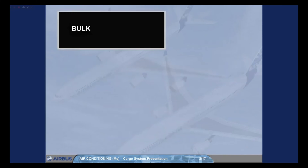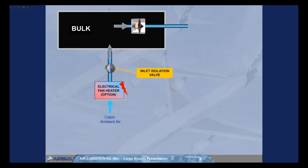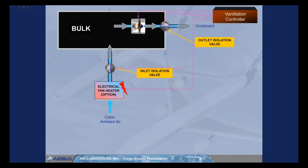On the long range, cabin ambient air enters into the bulk cargo compartment via an inlet isolation valve. This air, which can be optionally heated by an electrical fan heater, is then extracted by a fan and, via an outlet isolation valve, is sent overboard through the aft outflow valve. The ventilation controller controls the valves and the fans.